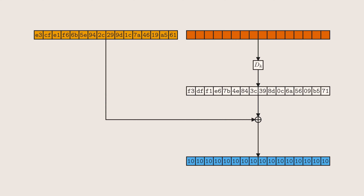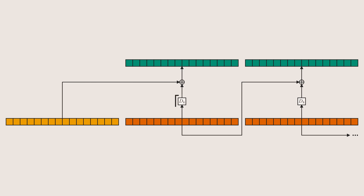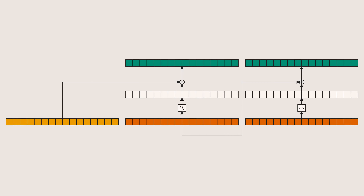We've now pulled off a padding oracle attack — we've recovered the full output of D_K without any knowledge of K. The multi-block case of this attack reduces to the single-block case. For each block we run the padding oracle attack to recover the cipher's output, then XOR with the previous ciphertext block to get the plaintext. Running the attack on our sample ciphertext: the second block decrypts to a full block of padding, and the first block decrypts to our target string. That's the padding oracle attack, or at least the simple version of it.